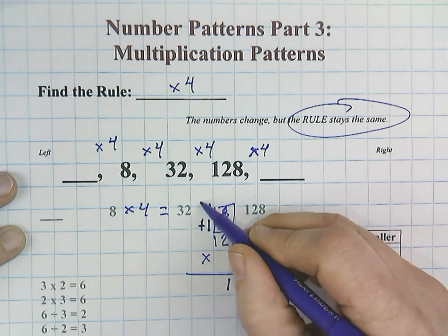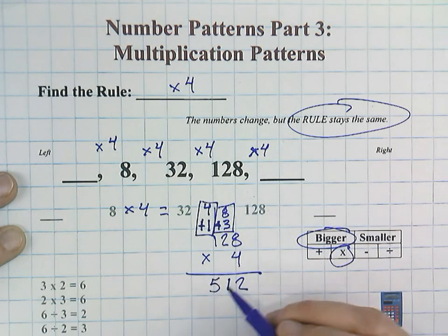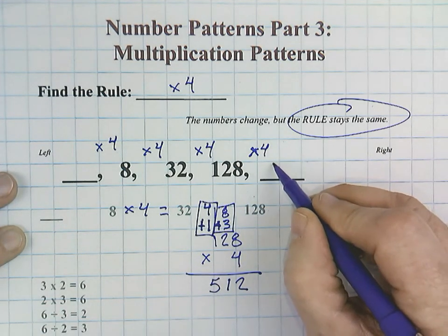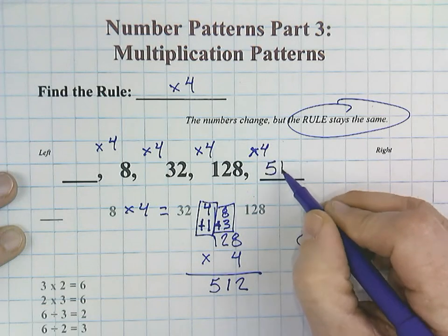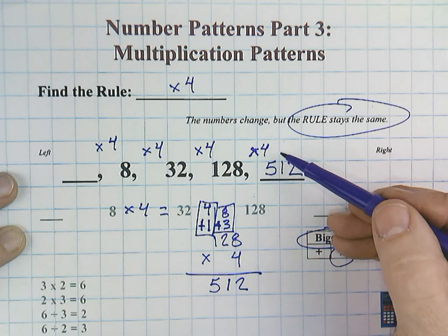4 times 1 is 4. Yeah, a little bit rough on my addition signs. 4 plus 1 would be 5. So our last number to the right here would be 512 using our times 4 rule.